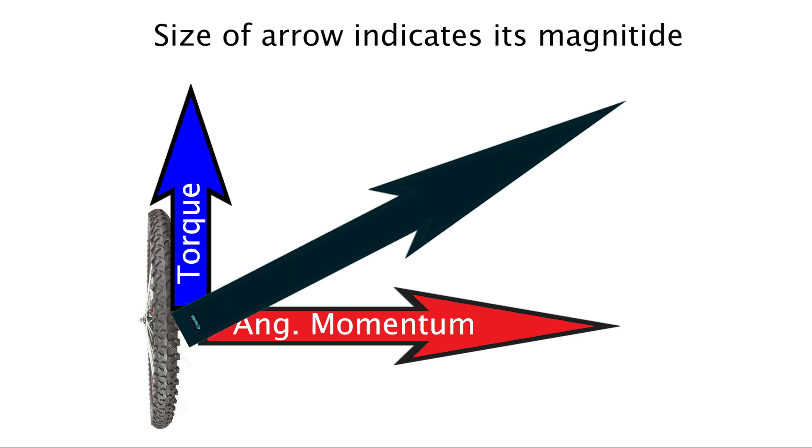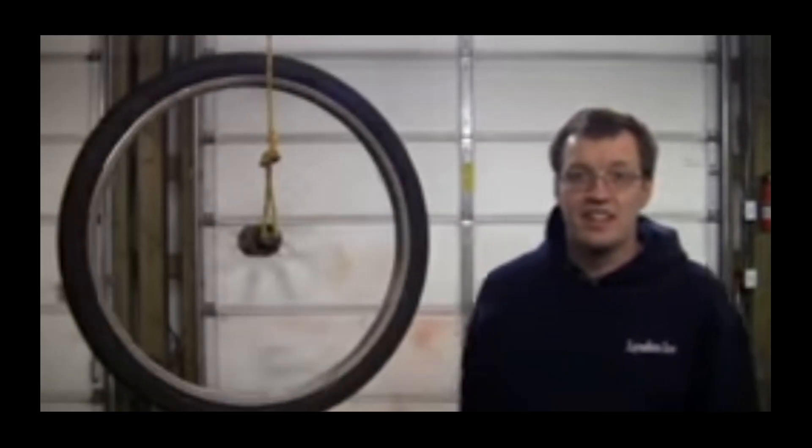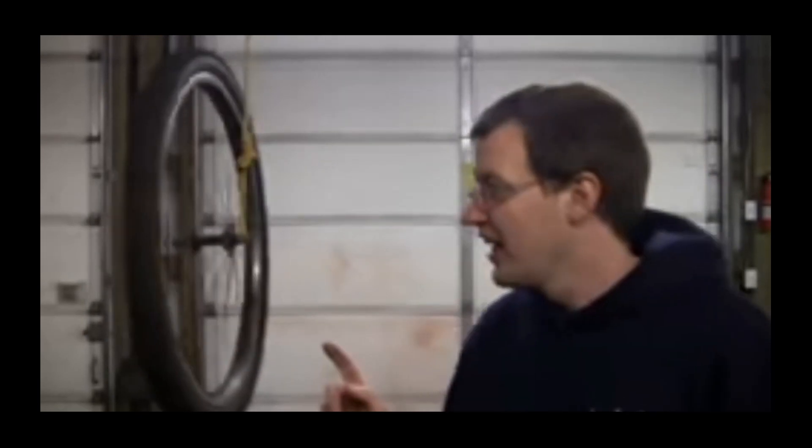So now the angular momentum vector wants to move to this new position, and as it does so, the whole system rotates and the torque vector moves again, constantly persuading the angular momentum to follow it, causing this precession.